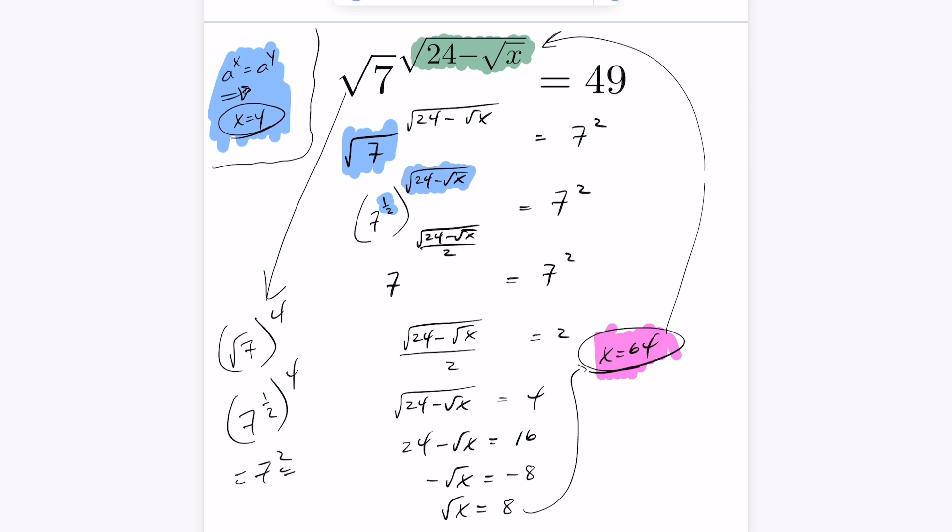Which is 7 squared, which is also 49. So the answer to this problem is 64.